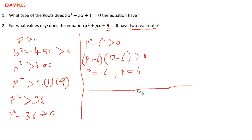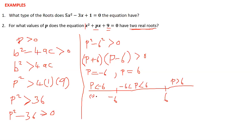To find the range of values of p, we draw a number line and place our critical points: negative 6 and positive 6. Numbers to the left are p less than negative 6, numbers to the right are p greater than 6, and numbers in between are between negative 6 and 6. Testing p equals negative 7: negative 7 plus 6 gives negative 1, and negative 7 minus 6 gives negative 13. Negative times negative gives a positive number.